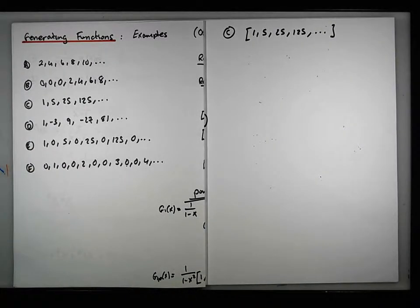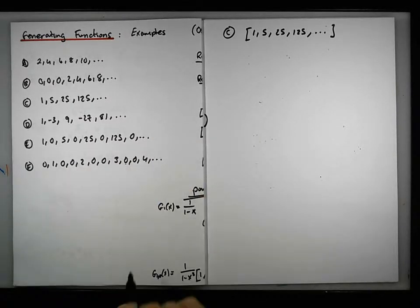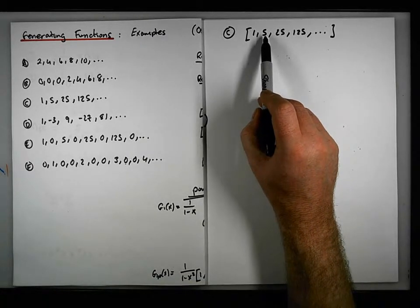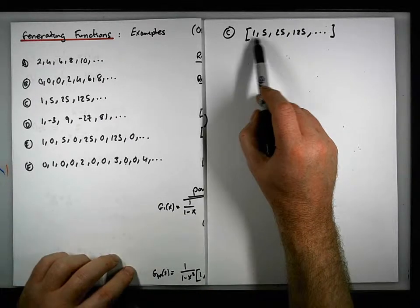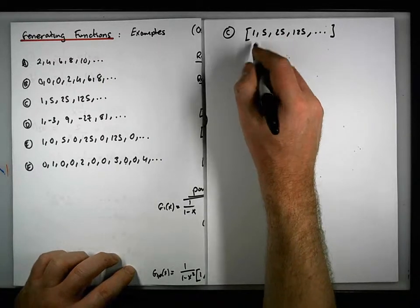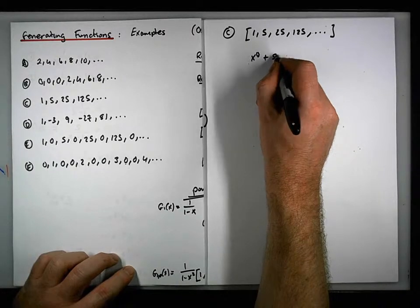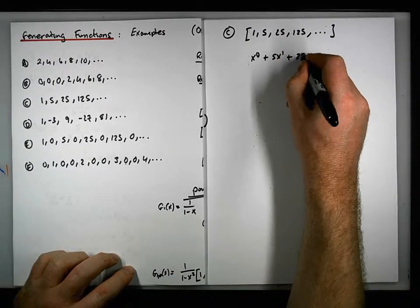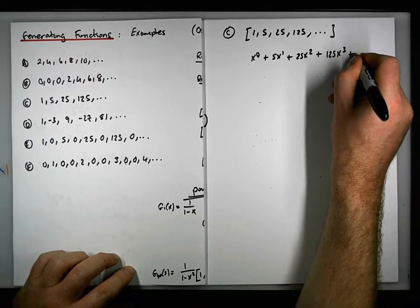So what we're going to do here is we're going to do a substitution. I didn't do this particular example earlier. But if you look, you can see that what's happening here is that this is 5 times the previous term. So this is basically encoding the power series x to the 0 plus 5x to the 1 plus 25x squared plus 125x cubed plus dot dot dot.